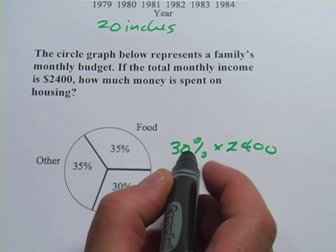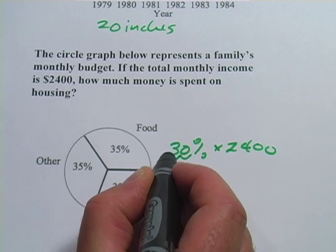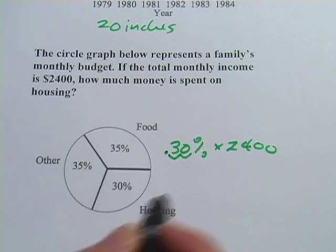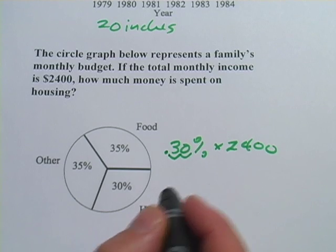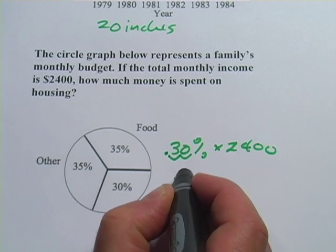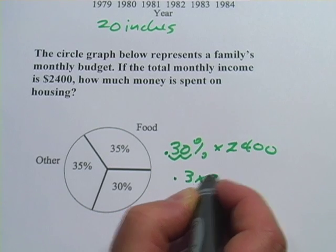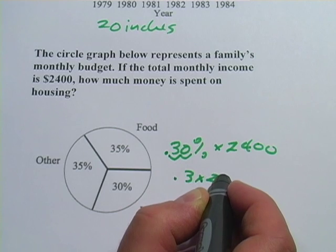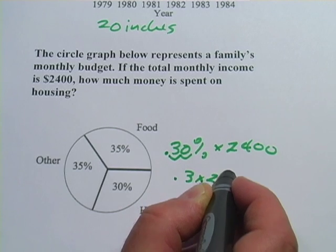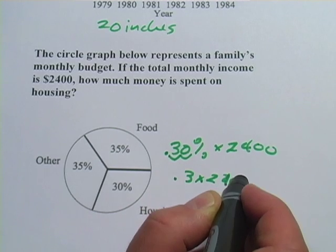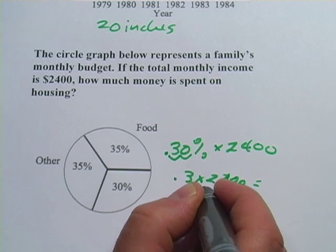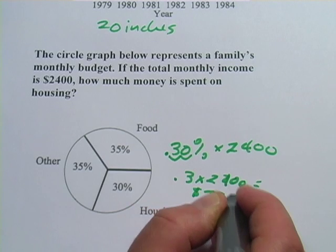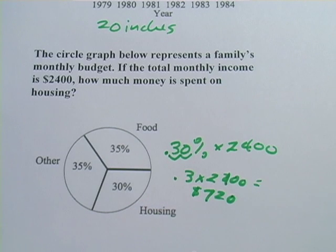To multiply, we have to convert this to a decimal by moving the decimal place two places to the left, so that would be 0.3 times $2,400. And according to my calculator, that is $720 that they spend on housing.